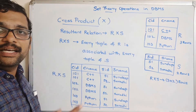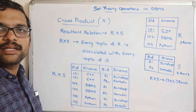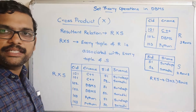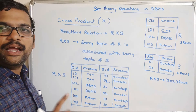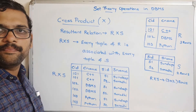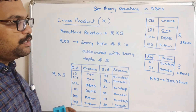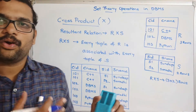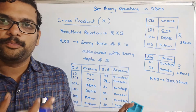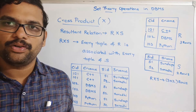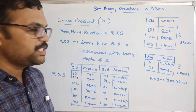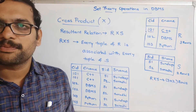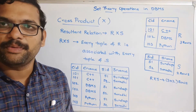These are all the set theory operations of relational algebra in DBMS: union, intersection, set difference, and cross product. Hope you understood. If you have any doubts, feel free to post in the comment section and I will clarify them. If you enjoyed the session, like, share, and subscribe to our channel. Thanks for watching.